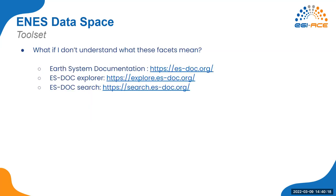If you don't understand the data you have — for example, you see facet names in a dataset identifier that you don't recognize — luckily since this data comes from ESGF, we have a toolset documenting this data available from the Earth System Documentation hub at esdoc.org. There is an explorer that enables you to explore all the terms through a web interface, and the ES-DOC search enables you to find documentation and definitions for each facet. You can find longer names that may ring a bell, or find full descriptions and papers published around that dataset.